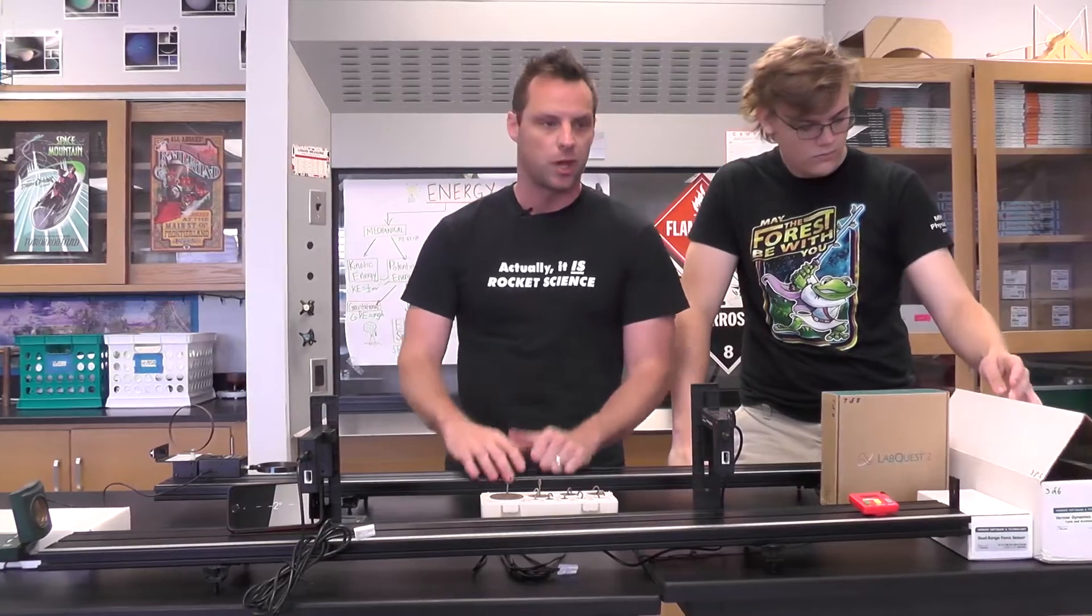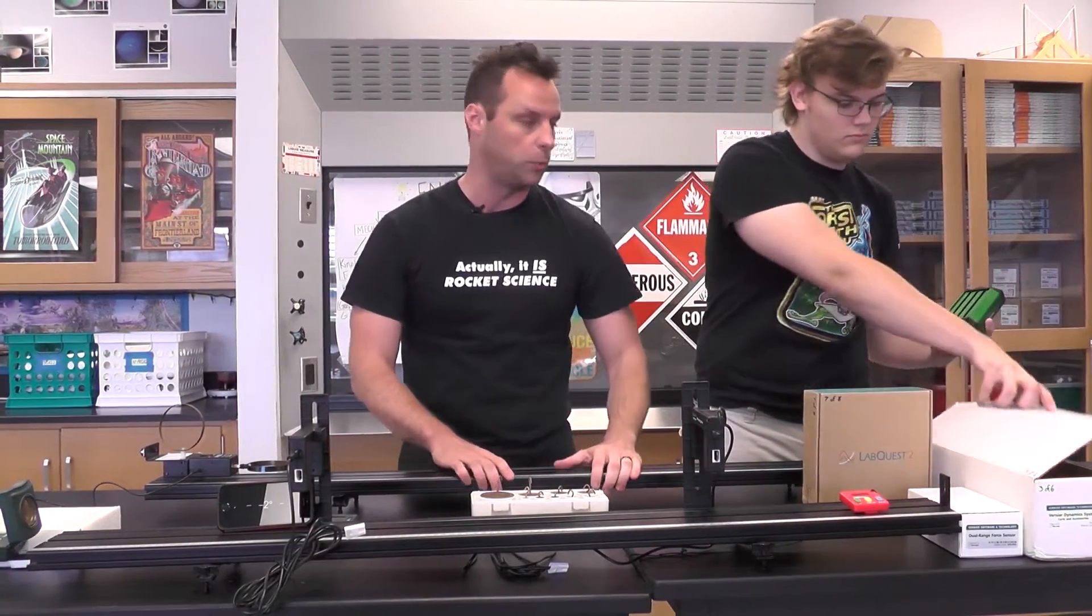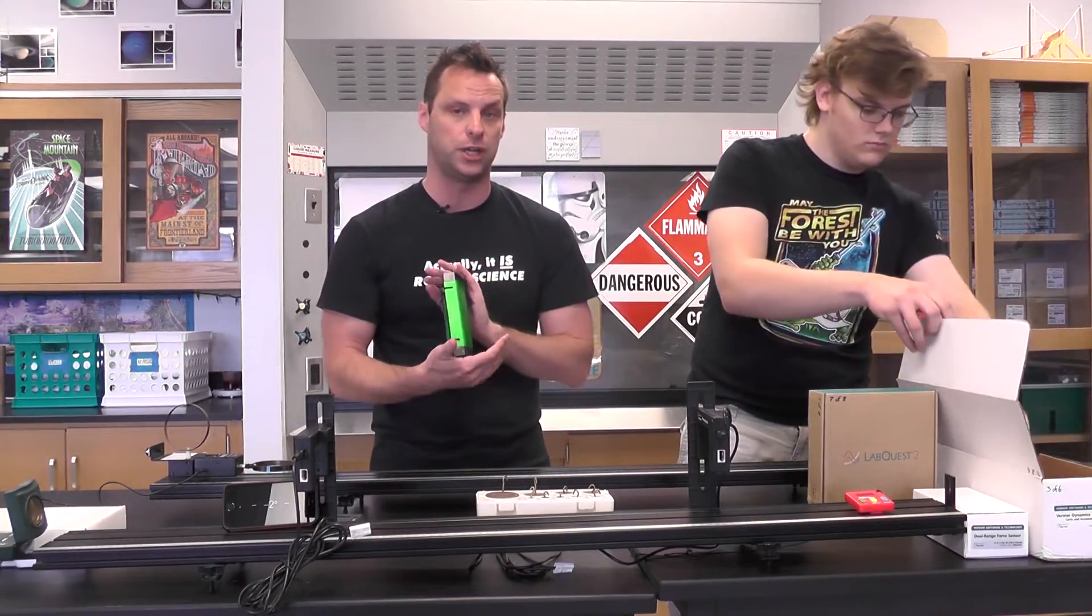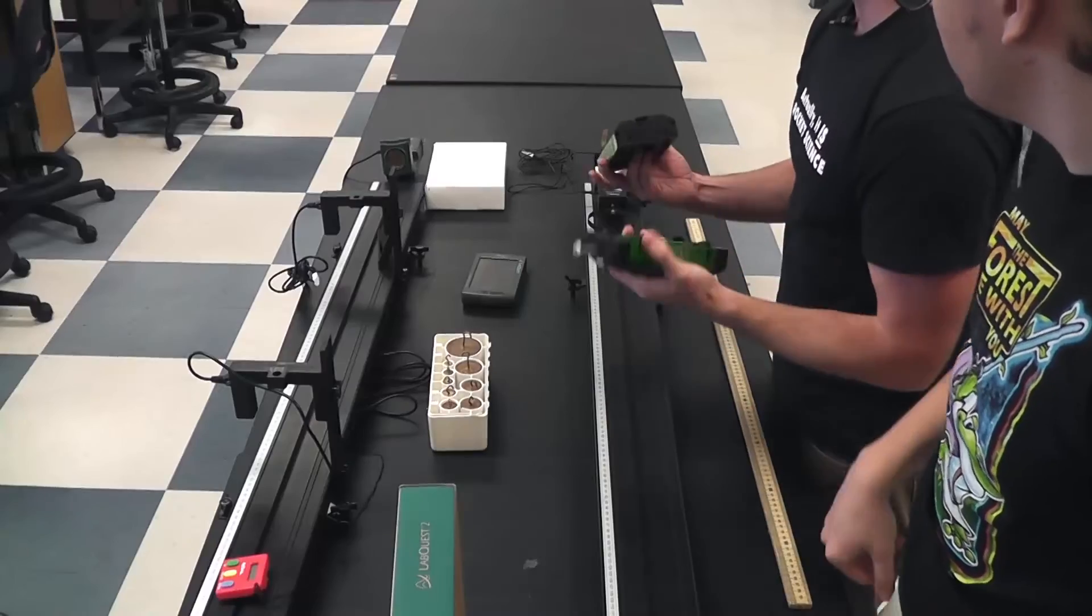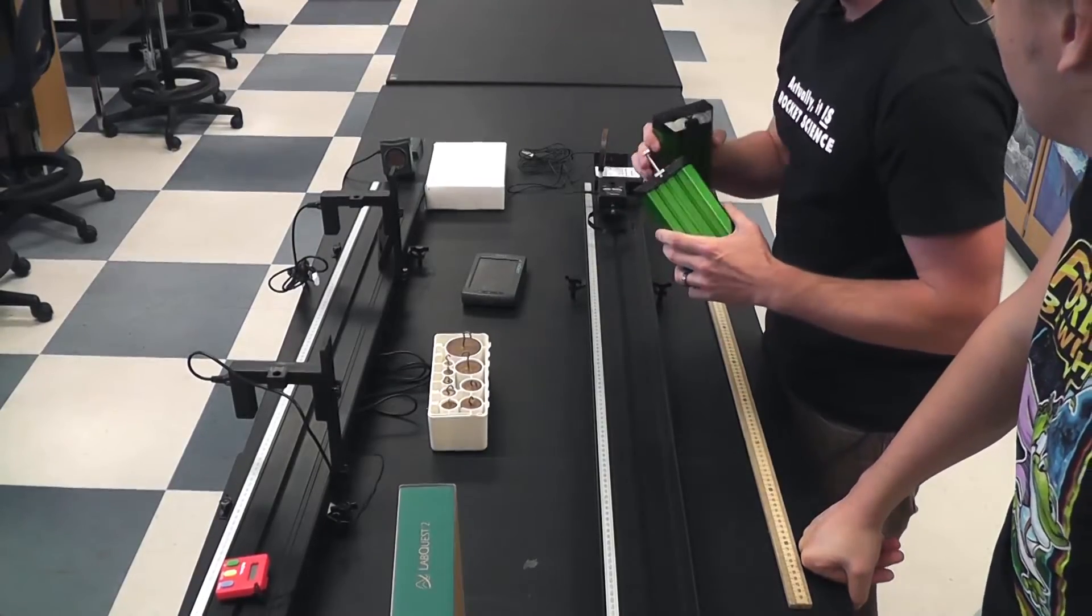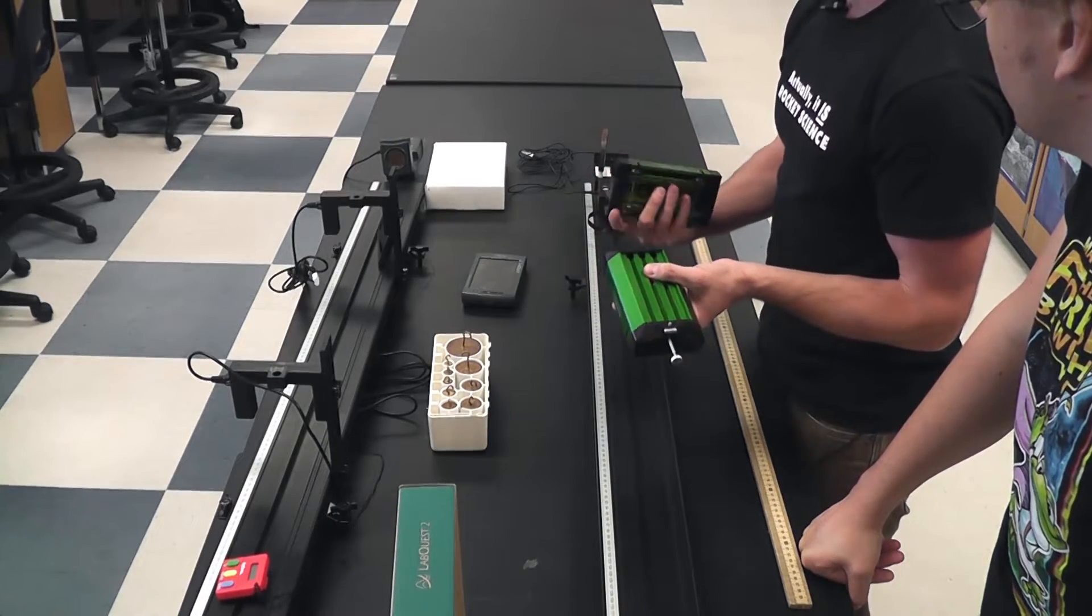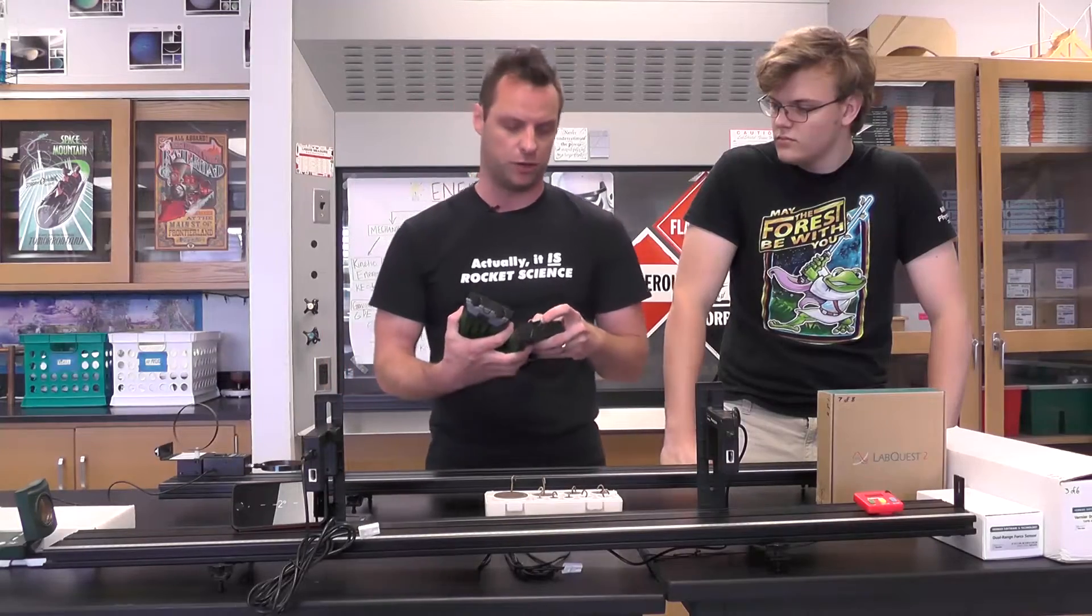So these are a cart and track set from Vernier. And Norm, do you mind to go ahead and this is what we call the long box, what Norm is opening here. It contains two of these beautiful shiny green Vernier carts. And yeah, I call them a sister set because they are set up with magnets inside one side and Velcro on the other side. So that you can create different kinds of collisions.